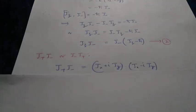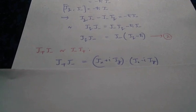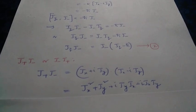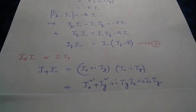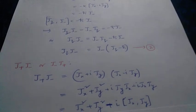We also derive expressions for J+*J− and J−*J+. For J+*J−, we write out both operators, multiply preserving order, and expand into four terms. Using the commutator of Jx and Jy, we obtain J+*J− = Jx² + Jy² + h-bar*Jz as equation (3).